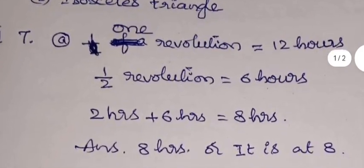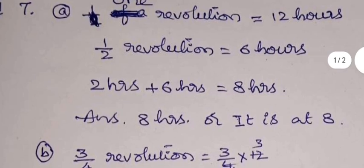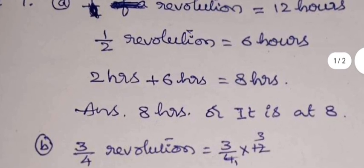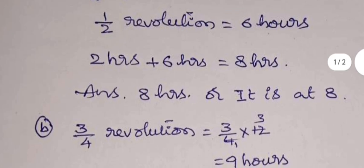One revolution means 12 hours, half revolution means 6 hours. Now the hour hand is at two and 6 hours distance it has to cover. Then the hour hand will be at 8 hours, or that means it is at 8.